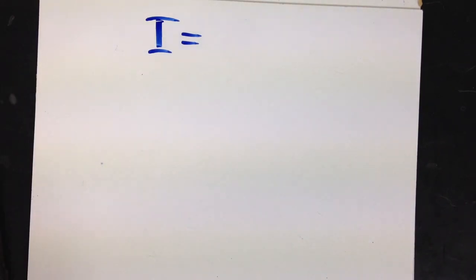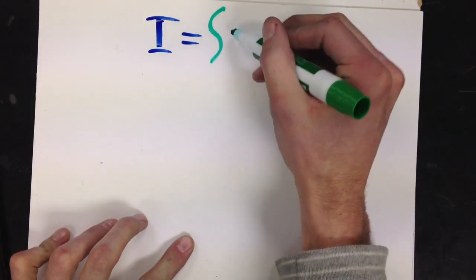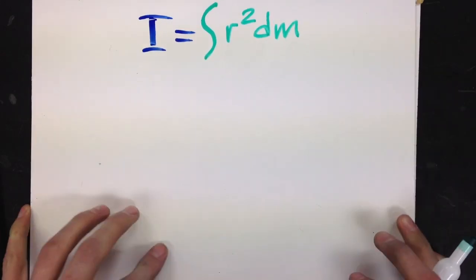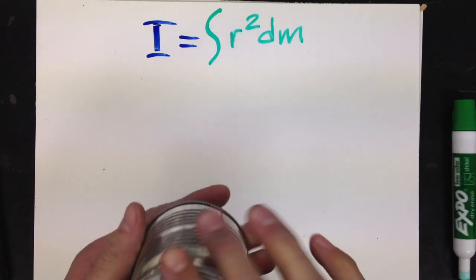Now, the moment of inertia, whenever you are deriving it for an object, it is the integral of r squared dm. Now, with the cylinder, here's going to be our strategy.